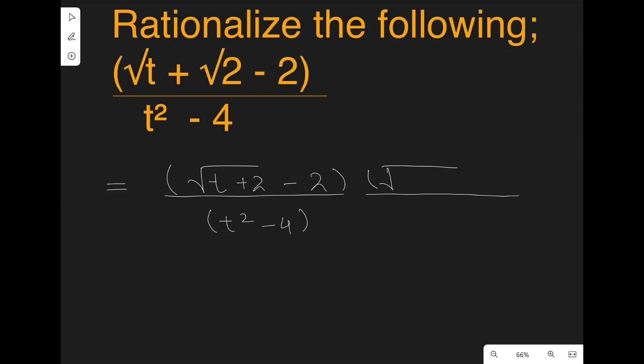For a numerator of √(t+2) minus 2, we're just going to multiply and divide it with √(t+2) plus 2, so that we can reach an algebraic formula.